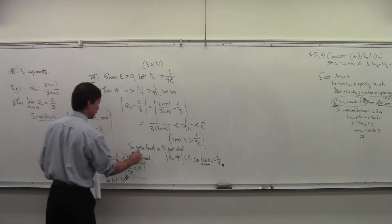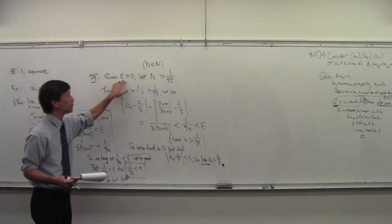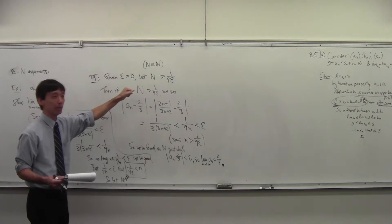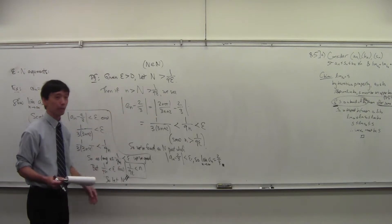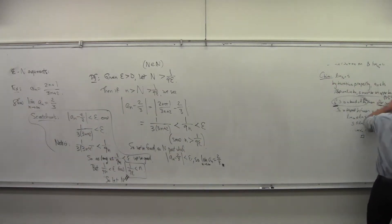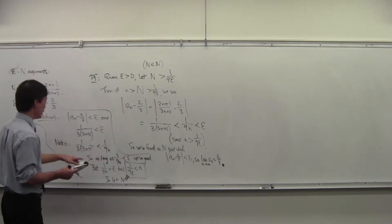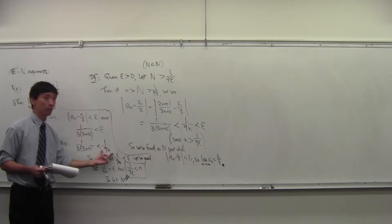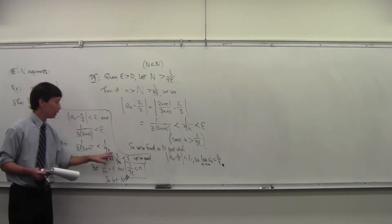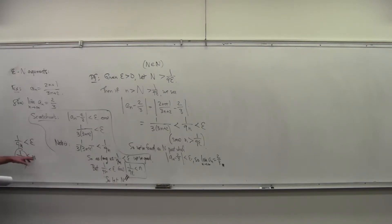You secretly figure out how to win the epsilon-N game, and then you write it up. If somebody gives you an ε, you just need to choose an N bigger than 1/(9ε), and then you show that N works based on the scratch work you did before.